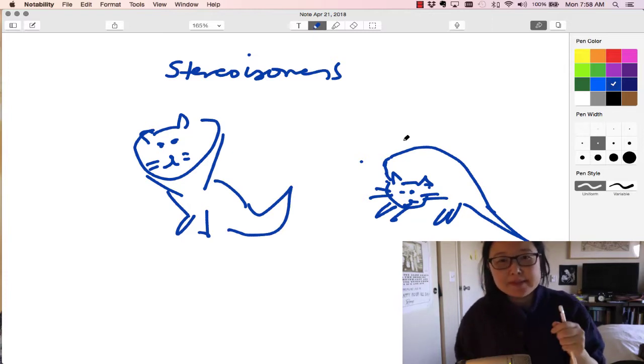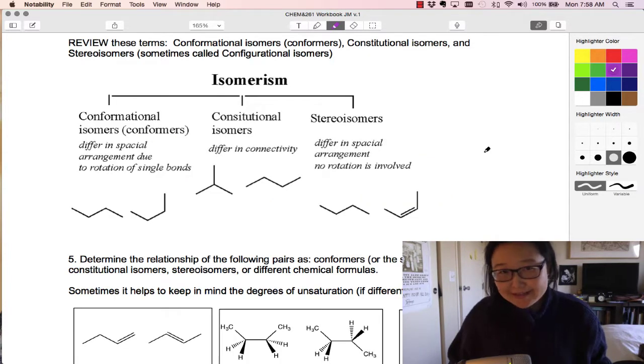they're forced into a different 3D spatial arrangement, which cannot be rotated out of. So that usually happens with molecules with rings or double bonds. So the terms I'd like you to be able to define are conformers, constitutional isomers, and stereoisomers. They go by different names sometimes, so I've added some here, but I would prefer if you just used those terms.